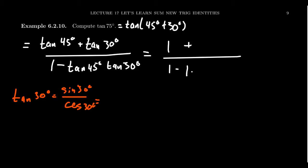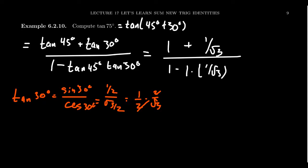Tangent of 30 degrees equals sine of 30 degrees over cosine of 30 degrees. Sine of 30 degrees is one half, cosine is root 3 over 2. Multiplying by the reciprocal gives one half times 2 over root 3. The 2s cancel, and you end up with 1 over the square root of 3.